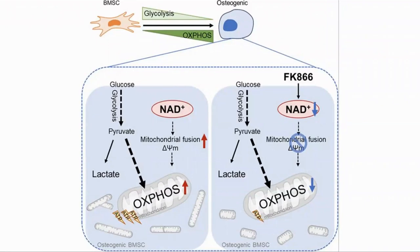For me, the takeaway was that NAD is required for the generation of bone cells from mesenchymal stem cells. As stem cell exhaustion and lower NAD levels are both symptoms of aging, this could contribute to osteoporosis. Searching on the web, I find that it might also impact muscle cells in a similar way and contribute to sarcopenia. So another great reason to keep NAD levels up.